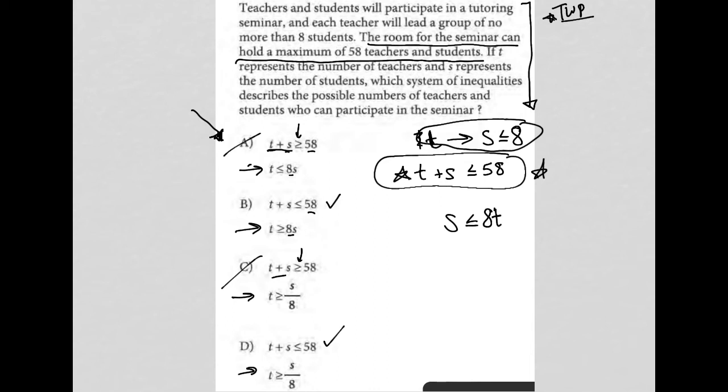And hopefully that makes sense. For every teacher, they can have up to eight students. So if there was one teacher, you could say one times eight. If there are three teachers, you could say three times eight. And we're saying is less than or equal to because we're not saying that it has to be equal to that. Because the question said they can have up to that, no more than eight students. So hopefully this makes sense. This S is less than or equal to eight T.